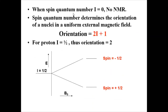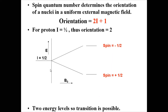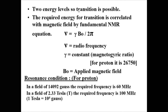When the spin quantum number I equals zero, there will be no NMR — you will never get an NMR signal. The spin quantum number determines the orientation of a nucleus in a uniform external magnetic field. When 2I + 1 gives the number of orientations, putting I equal to 1/2 gives two orientations and two energy levels, so a transition is possible.